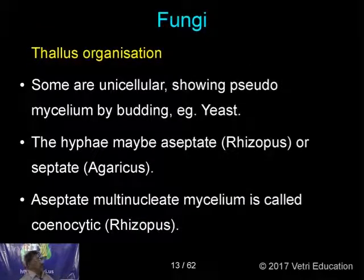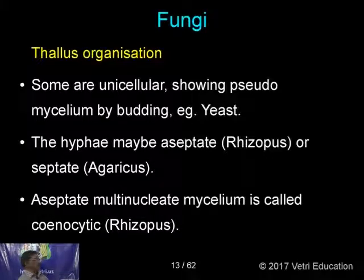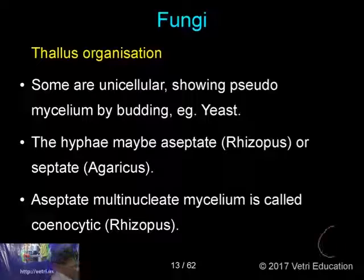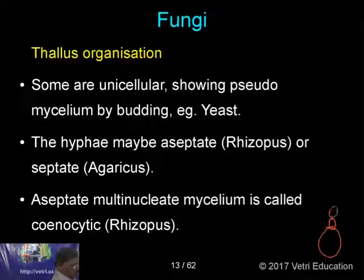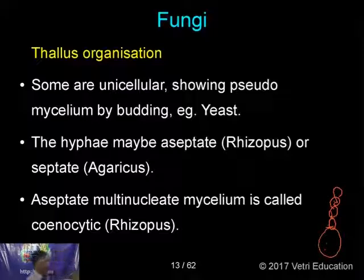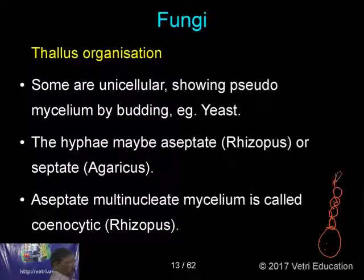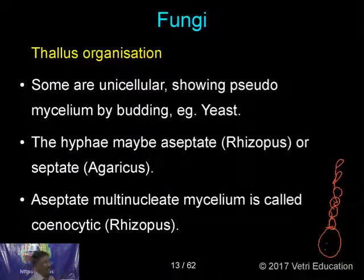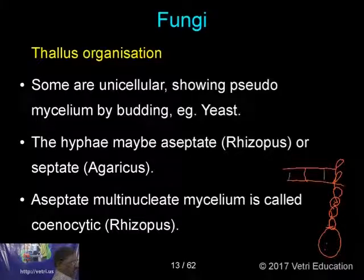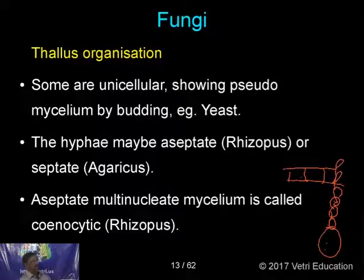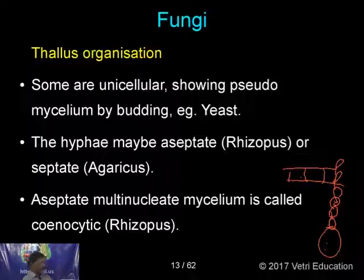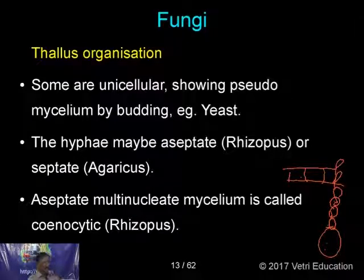Some fungi are unicellular, showing pseudo-parenchyma by budding — for example, yeast. A yeast cell by budding gives a chain of cells, so it is actually unicellular but showing pseudo-mycelium. The hyphae may be aseptate — septa means the cross-wall between two cells. Some have no septa (aseptate), as in Rhizopus, and some are septate, as in Agaricus. Aseptate, multinucleate mycelium is called coenocytic — as in Rhizopus and Mucor.